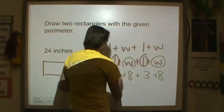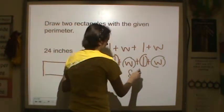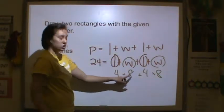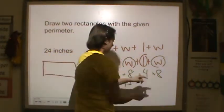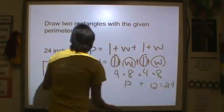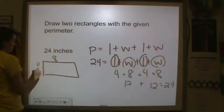So let's try another one. Let's try 4 and 8. 4 plus 8 is 12, 4 plus 8 is 12. So 12 and 12 is equal to 24. So one possible way I could do this would be 8 by 4 inches.